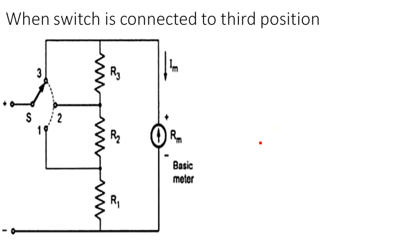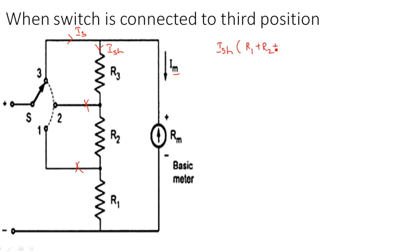Coming to the third position, when switch is connected to the third position, all three resistors R1, R2, R3 are in series, and this series combination comes in parallel with the meter. The current coming in is I3, the shunt current is Ish, and the meter current is Im. The equation is: Ish × (R1 + R2 + R3) = Im × Rm.